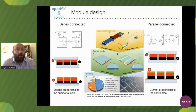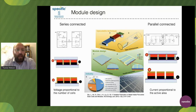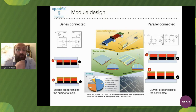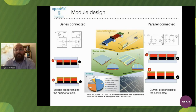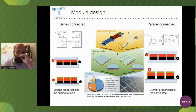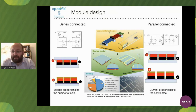Briefly to wrap up, in the context of the next few talks: module design generally comes in two ways - series connected, where the top electrode is connected to the bottom electrode and charge passes through each strip, with voltage proportional to the number of cells; and parallel connected, where you effectively place two electrodes on top of each other with no overlapping, connecting one and the other - we'll probably see that in Hongwei's discussion.